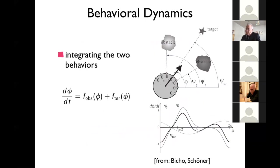That was obstacle avoidance. For target acquisition we treat the target as symbolic — knowing there's one contribution at a particular target angle, nothing changed there. In the combined dynamics, the target attraction may be overpowered by obstacles: the black curve can have a repeller at the target direction, with an attractor somewhere to the side, corresponding to the vehicle turning around to the left or right.